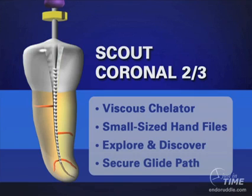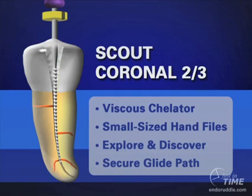We want a really smooth slide path so we can move in gently, smoothly, and progress apically. We are not trying to go to length — only about two-thirds of the overall distance. The rubber stop is never allowed to move to the full expected working length. The file is set at the expected diagnostic working length, but we keep the stop back about three millimeters, creating a slide path short of length.